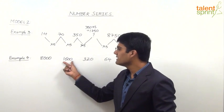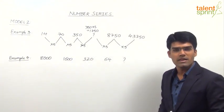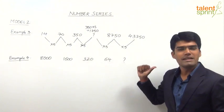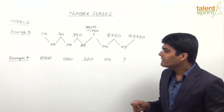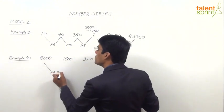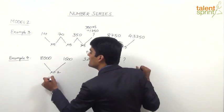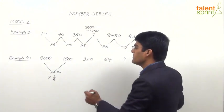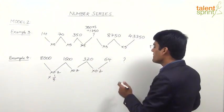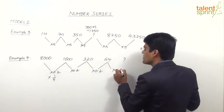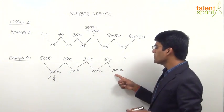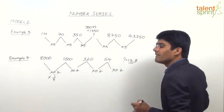Let us take another example: 8000, 1600, 320, 64 — what will be the next term? This series is similar to the previous geometric example, but here the multiplication factor is a decimal value, not an integer. For example, 8000 into 0.2 gives 1600, 1600 into 0.2 gives 320, 320 into 0.2 gives 64. So 64 multiplied by 0.2 equals 12.8, which is the missing term.